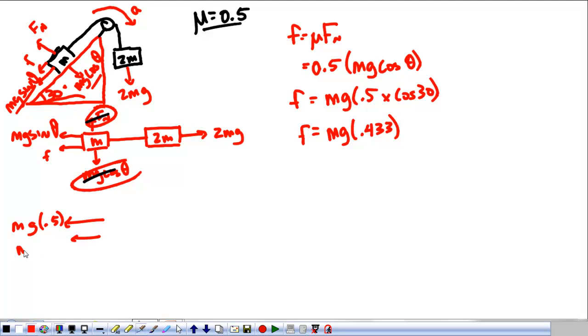Mg times 0.43 pulling back. A mass of M attached to a mass of 2M that has 2Mg pulling it this way.